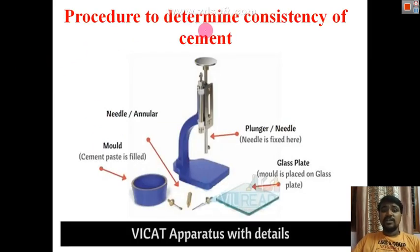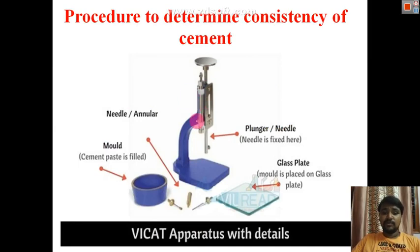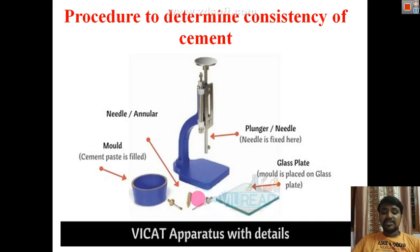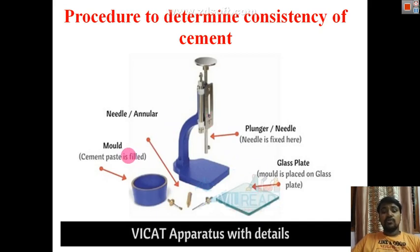Whatever test you conduct, you use three different needles for testing. The original picture of the Vicat apparatus shows the mold and the three different needles: one for final setting time, one plunger for normal consistency, and one needle for initial setting time, along with a glass plate.